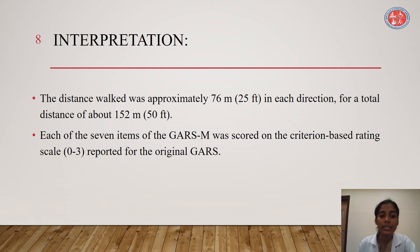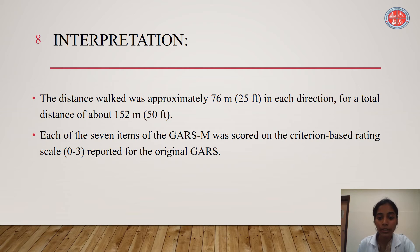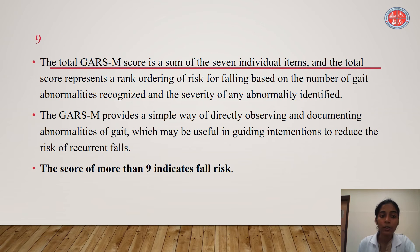For interpretation, the distance walked was approximately 76 meters (25 feet) in each direction, for a total distance of about 152 meters. Each of the 7 items of GARS-M was scored on the criteria-based rating scale of 0 to 3, as reported by the original GARS. The total GARS-M score is the sum of the 7 individual items, and the total score represents a rank ordering of risk of falling based on the number of gait abnormalities recognized and the severity of any abnormality identified.